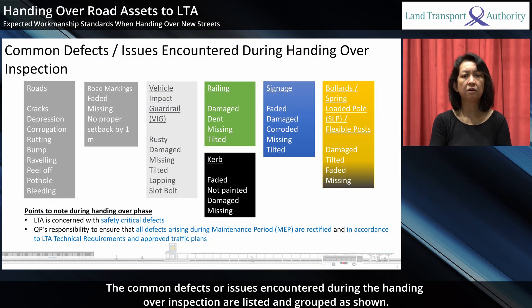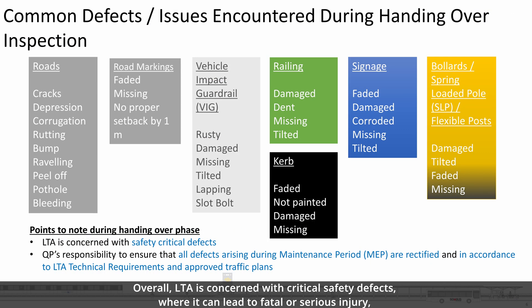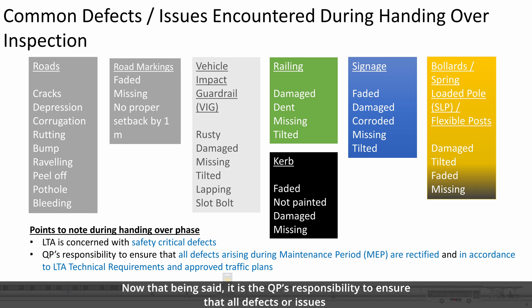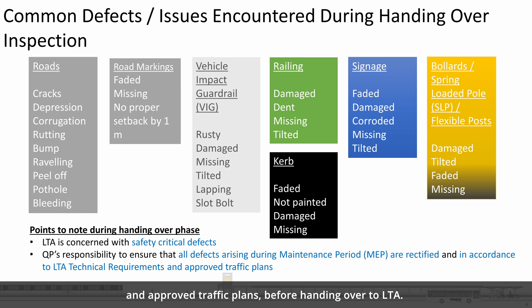The common defects or issues encountered during handover inspection are listed and grouped as shown. Overall, LTA is concerned with critical safety defects, where they can lead to fatal or serious injury or even severe damage. It is the QP's responsibility to ensure that all defects or issues arising during the maintenance period (MEP) are rectified in accordance with the LTA technical requirements and approved traffic plans before handing over to LTA.